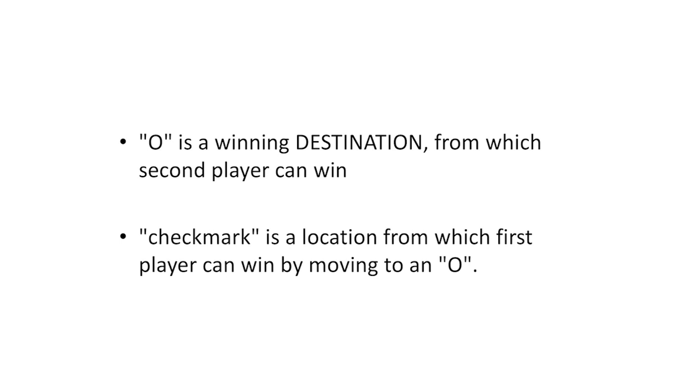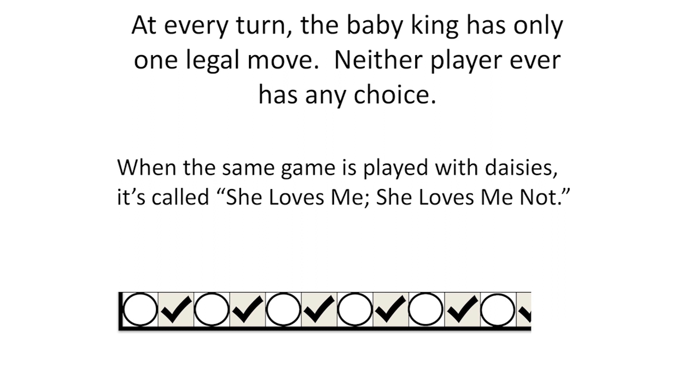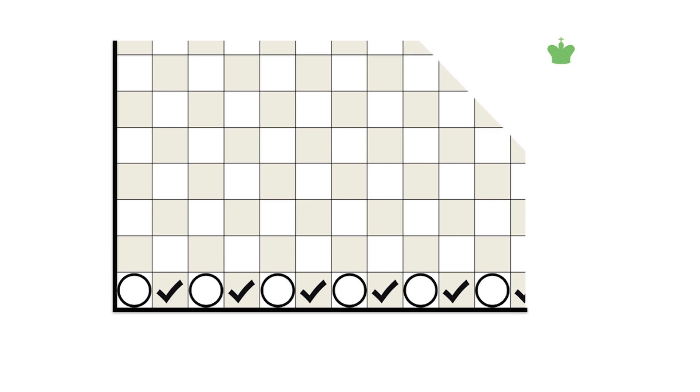Let's look again at the game of the baby king. At every turn, neither player ever has any choice. When this game is played with daisies, it's called She Loves Me, She Loves Me Not. The outcome depends only on whether the total number of moves from the starting position to the end of the game is even or odd.